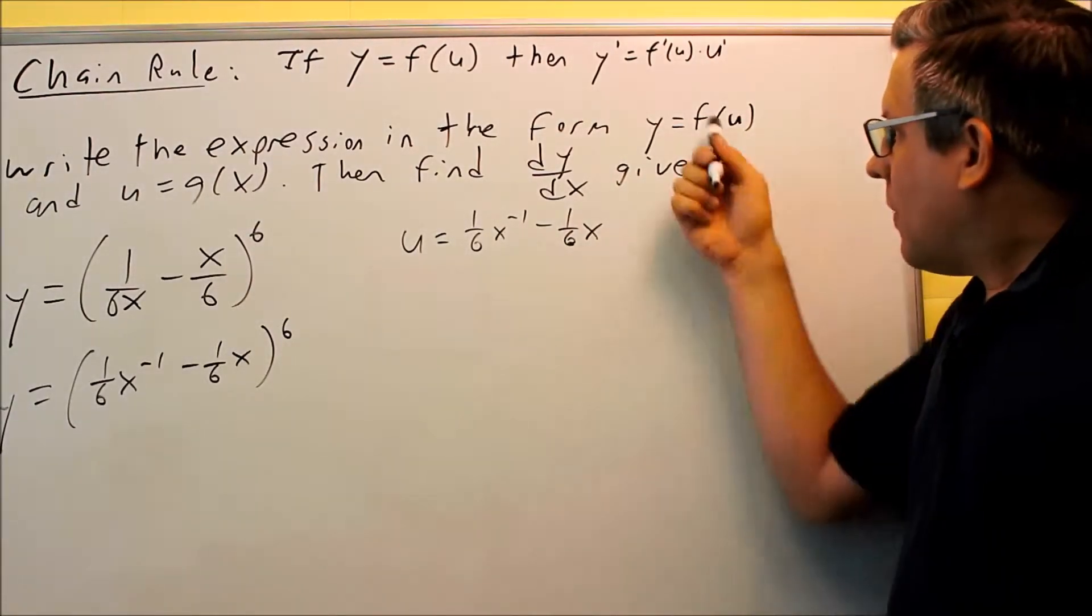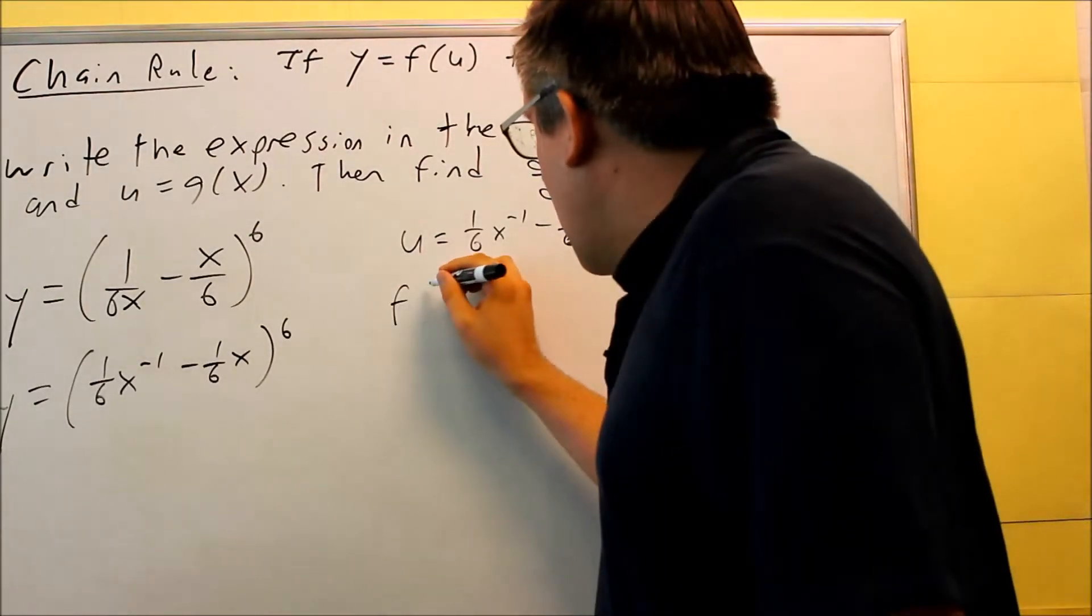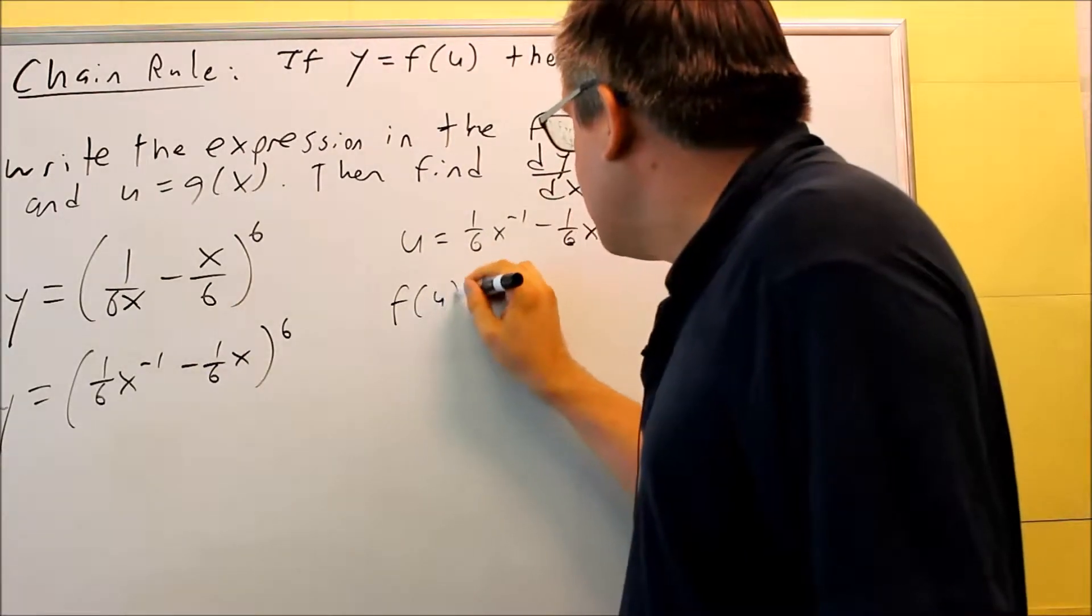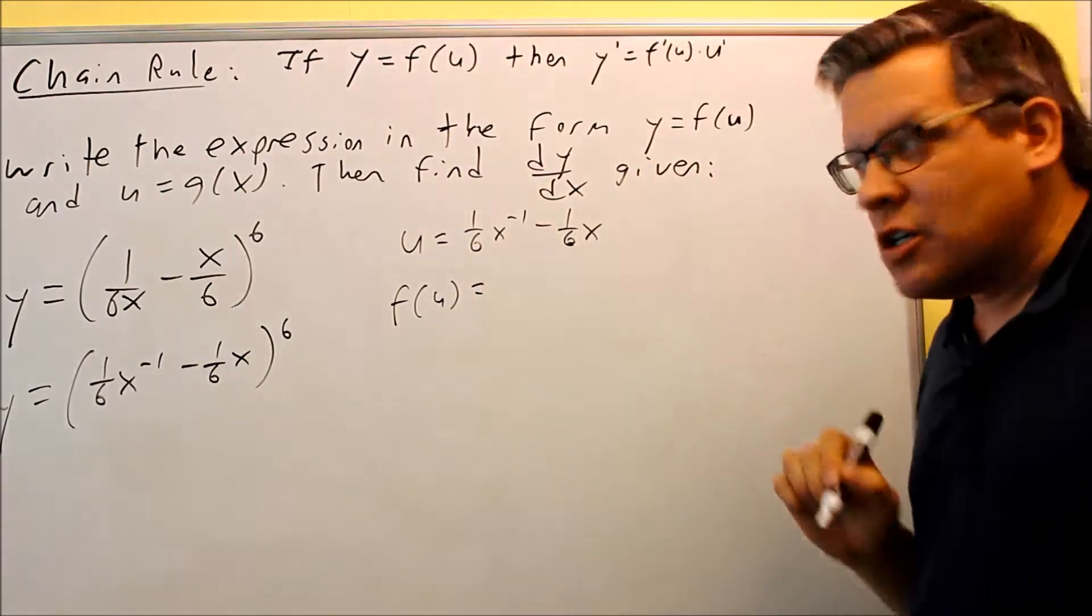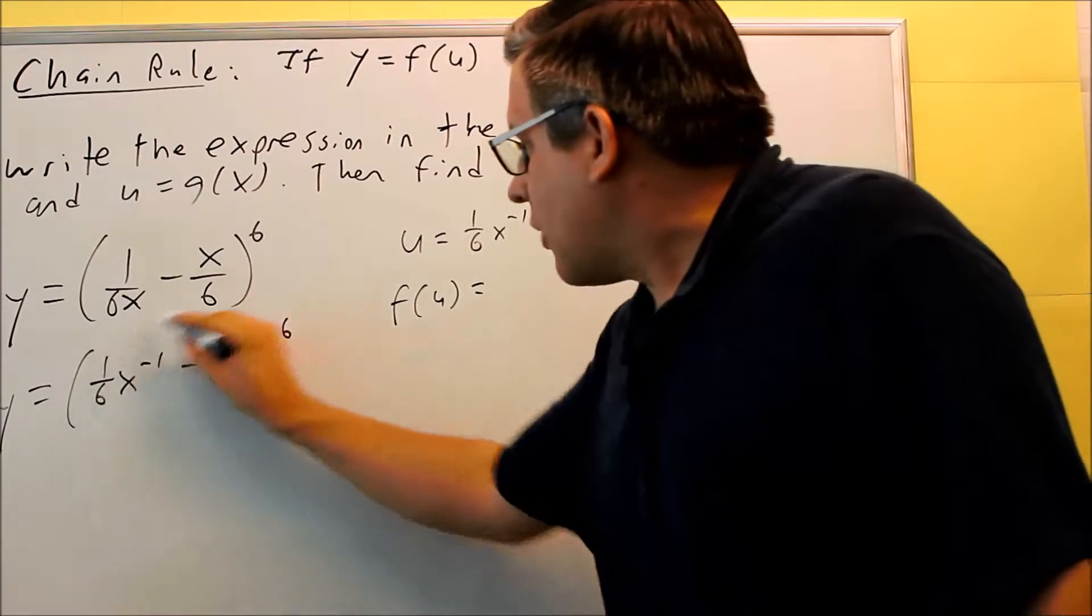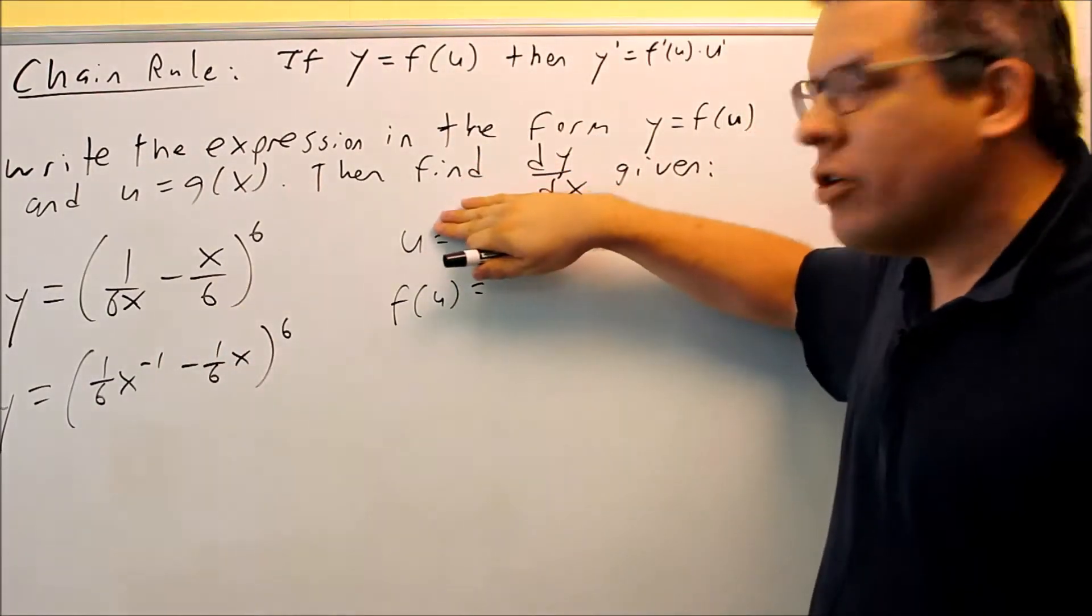Next, we want to find F of U. So F of U, or again, you could write this as Y equals. If I take out all this and replace it with U, this is what I get.